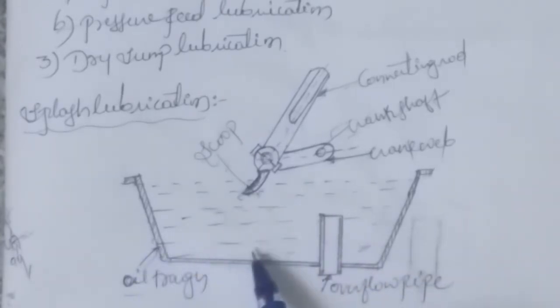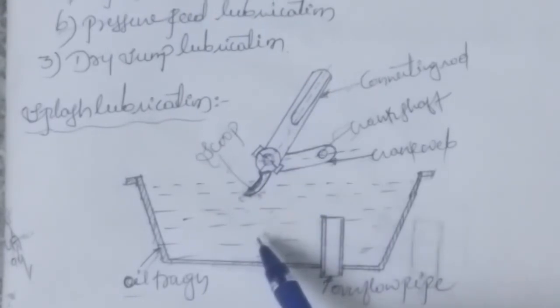The oil is stored in the oil trough. When the engine runs, the connecting rod oscillates and the scoop takes the oil from the oil trough.